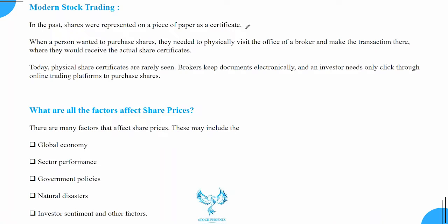In modern stock trading, in the past, shares were represented on a piece of paper as a certificate. When a person wanted to purchase shares, they needed to physically visit the office of a broker and make a transaction there, where they would receive the actual share certificates. For example, if you wanted to buy Reliance shares fifty years ago, you had to go to some broker, not the Reliance office, and apply for shares at the current market price, and they would give you physical share certificates. Today, physical share certificates are completely scrapped — that era is over.